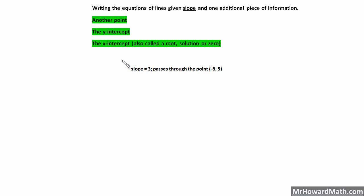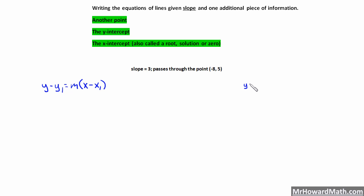I'll show you how to use your calculator as well on some of them. So let's look at this first example. We're given a slope of 3 and we pass through the point negative 8, 5. I'm going to show you two ways to work this: using the point-slope formula, which is y minus y1 equals m times x minus x1, and using y equals mx plus b and solving for b.